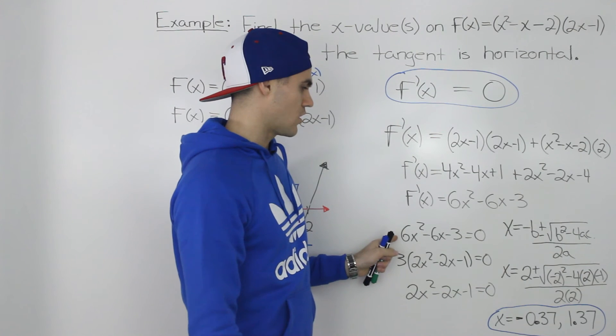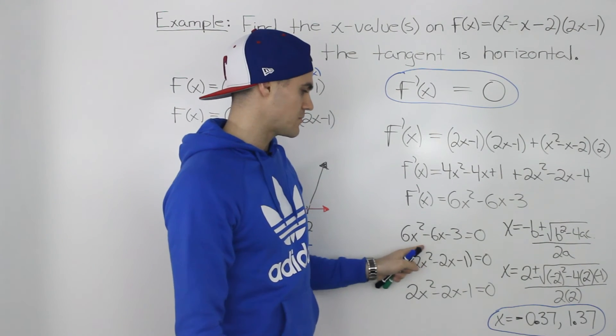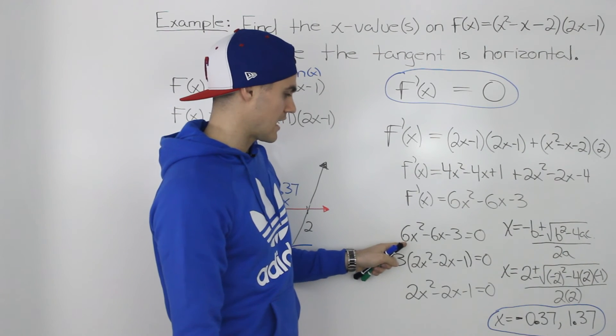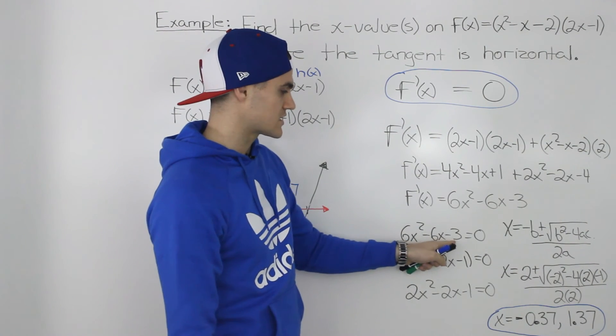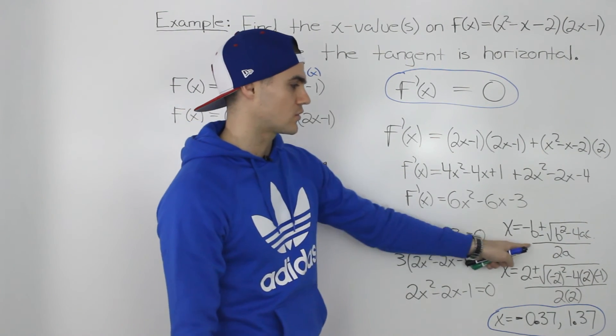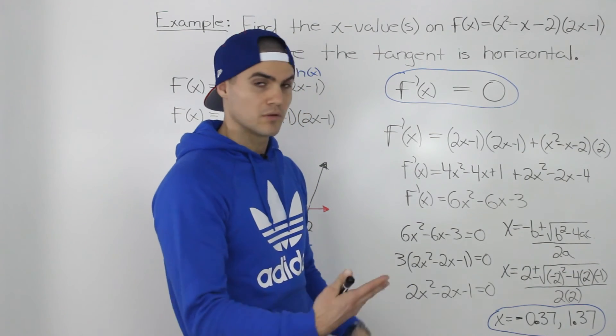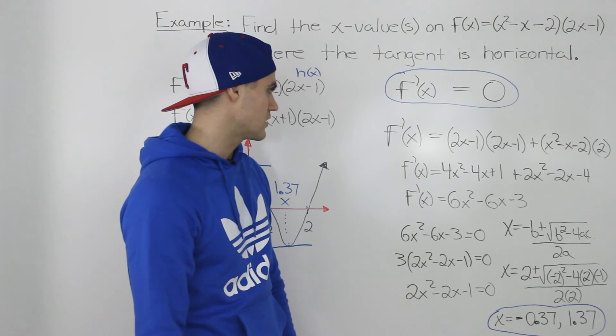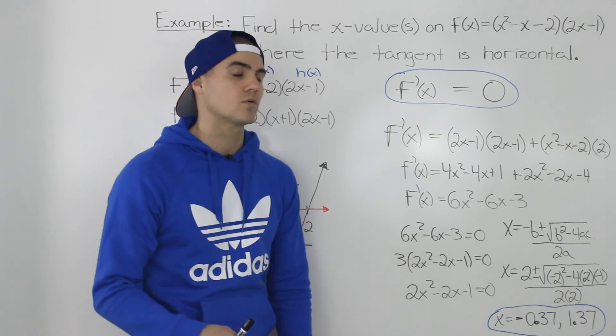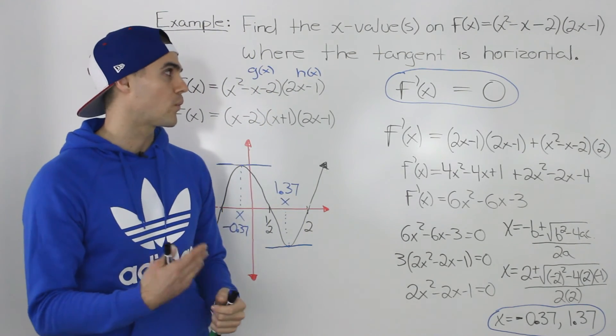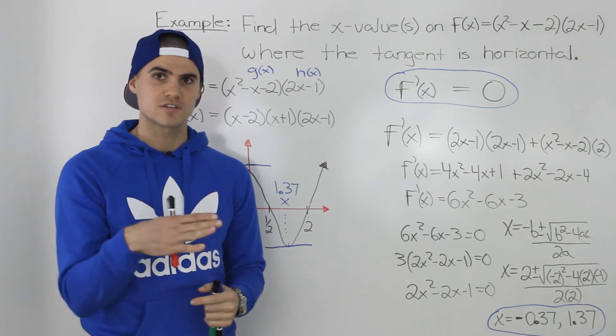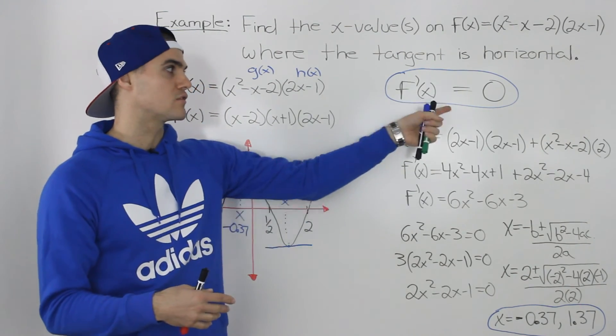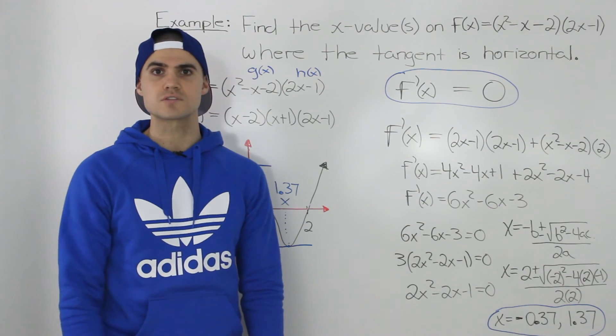Now, we could have also solved the quadratic equation from this step here. We didn't have to factor out a 3. So we could have just plugged in that a value of 6, that b value of negative 6, that c value of negative 3 into the quadratic formula. We'd be working with bigger numbers, but we would still get the same answer. So either case works. Just remember, whenever they're asking for where a tangent is horizontal, a horizontal line has a slope of 0. So you make the derivative equal to 0 and solve for those x values.